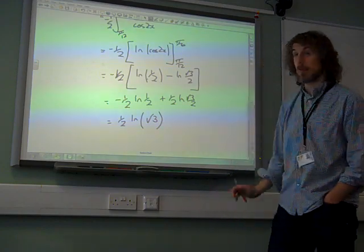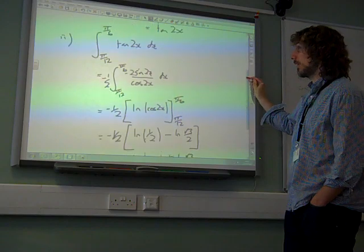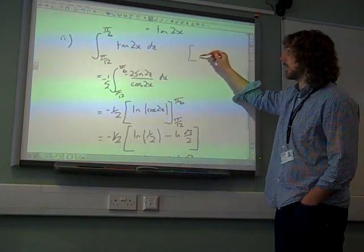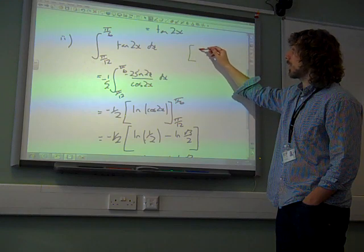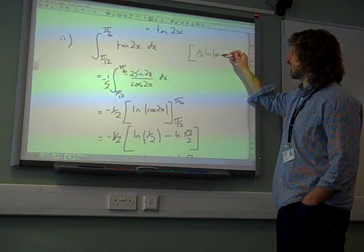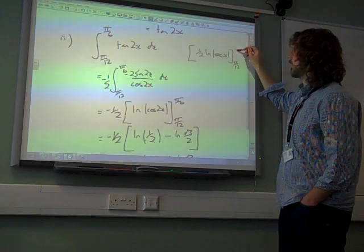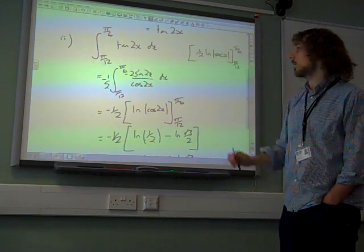Of course, that was a more complicated way. It's much easier, isn't it? To look in the formula booklet as long as you do that right. And get this as being half natural log of sec 2x between pi by 12 and pi by 6. Sec 2x. Yeah.